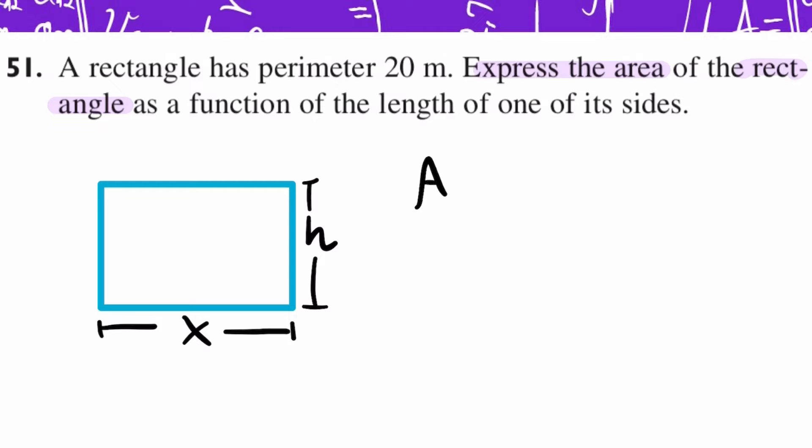The formula of the area is base times height. In this case we have base, I'm going to call it base b, so we have b times h. But they are asking us to give it as a function of the length of one of its sides. We have two sides, b and h, and we need to give the solution only with b or only with h, only with one letter.